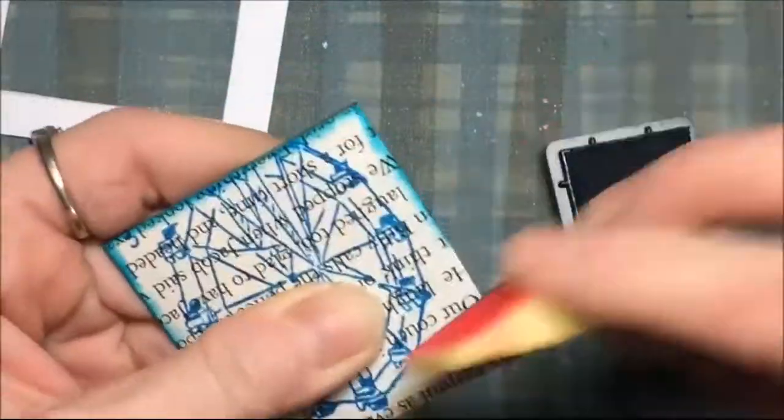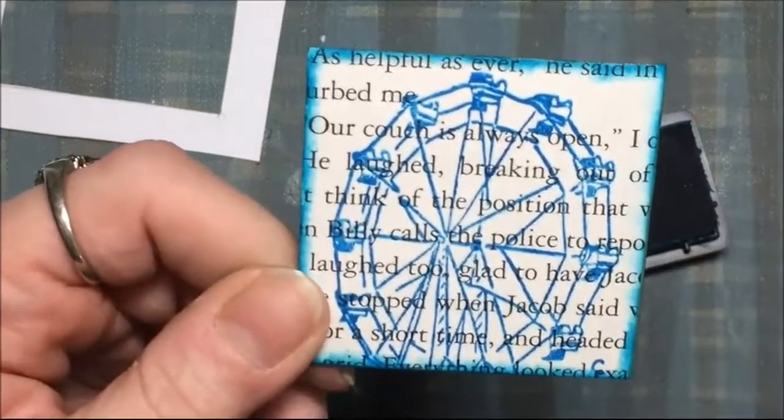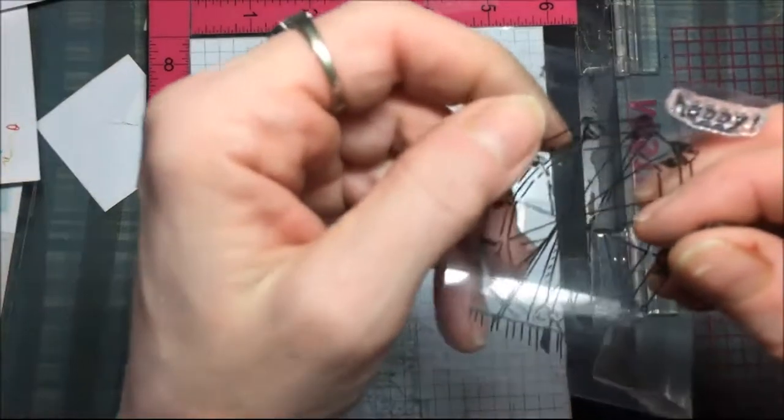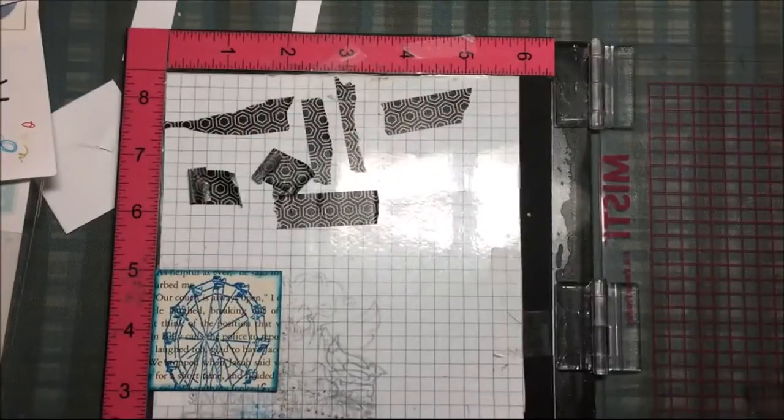Then I'm distressing the edges with some blue distress ink. Then I decide that I want to stamp that fun word on there because there's a perfect spot for it.